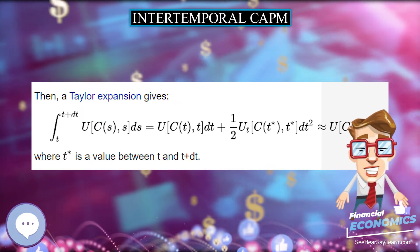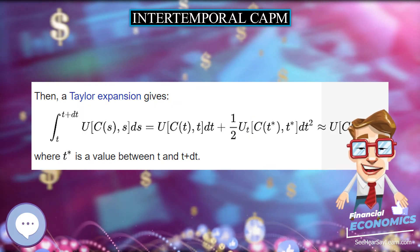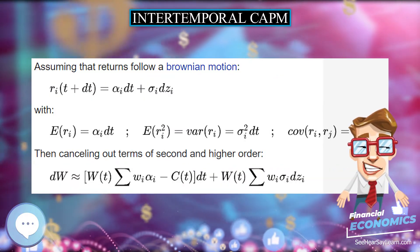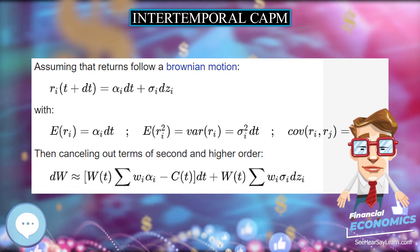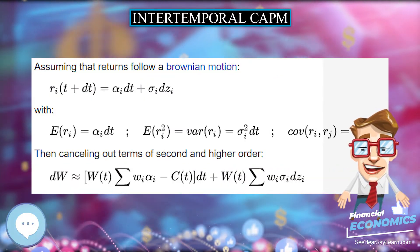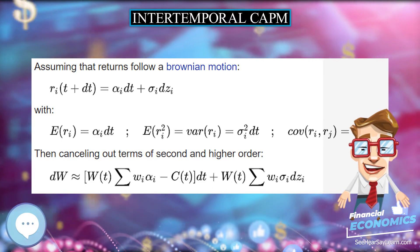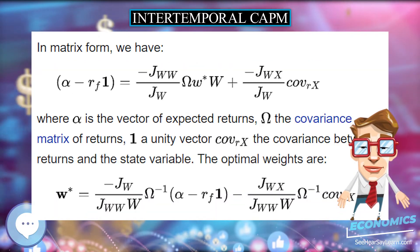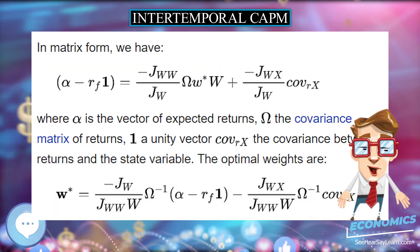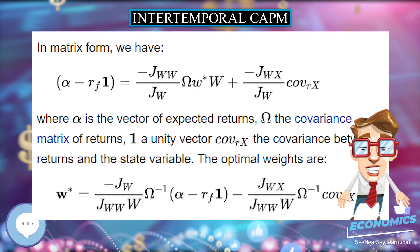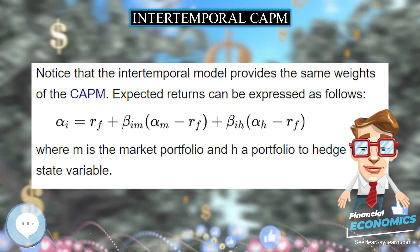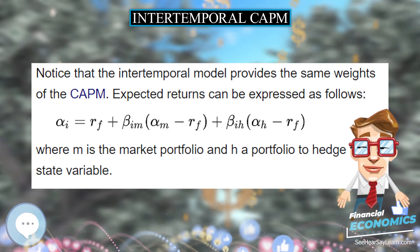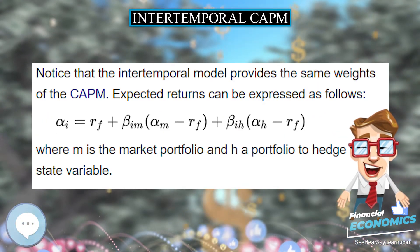The investor has the following constraint on wealth W. Let W_I be the weight invested in asset I. Then, where R_I is the return on asset I, the change in wealth is defined accordingly.